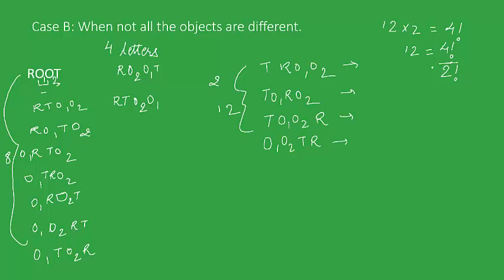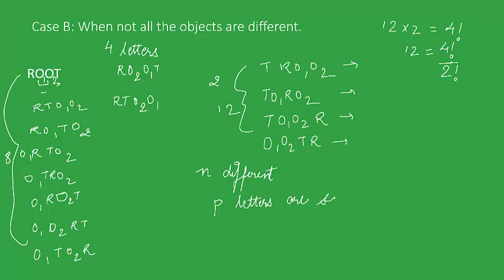That is to say, if we have a choice among 4 letters and 2 of them are the same, we obtain the formula as 4! / 2! and not 4!. So the formula here comes out to be: if we have N different letters from which P letters are the same, then the total number of permutations will be N! / P!.